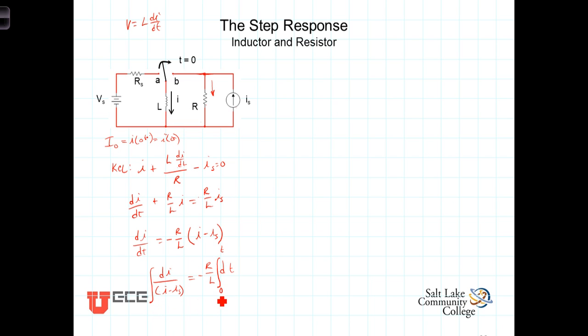On the left-hand side, we'll be integrating from the current that corresponds to I, or to t equaling 0. We're going to call that I naught, and we'll be going up to the current that corresponds to a value of t, which is I(t).